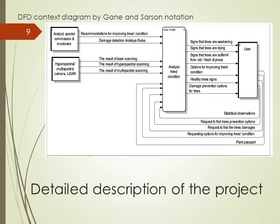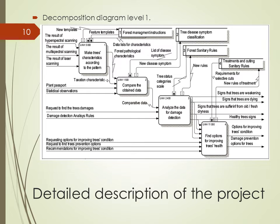Here is represented the system context diagram according to DFD methodology by Yourdon and Sarson notation. There are three external entities: the first is the user, the second is the analyst, special commission and moderator, and the last is hyperspectral and multispectral cameras and lidar. All data flows are the same as the arrows in the IDEF0 diagram. This decomposition is the same as decomposition level 1 of the IDEF0 context diagram, but it has data stores which are special for DFD methodology. These data stores contain all mechanisms from the IDEF0 diagram. All processes get information from these data stores and also give new information to them. For example, the first process gets feature templates and data lists for characteristics from forest management instructions, and returns new templates to that data store.